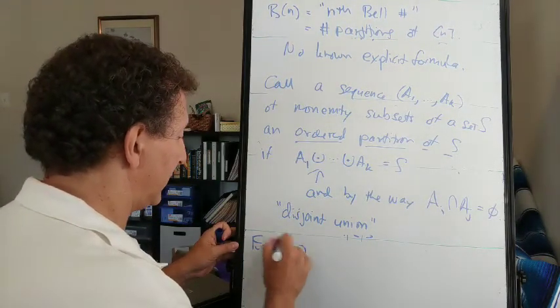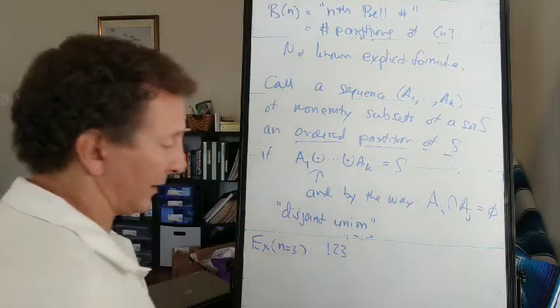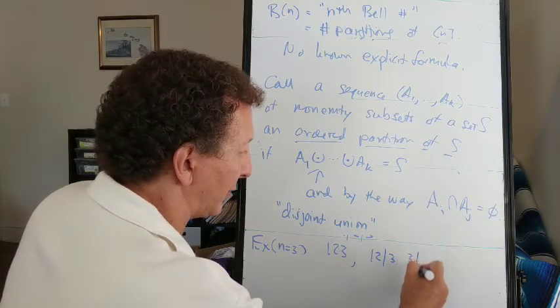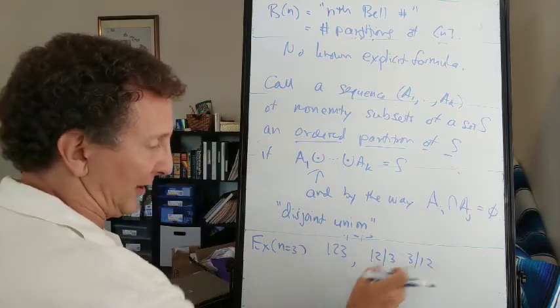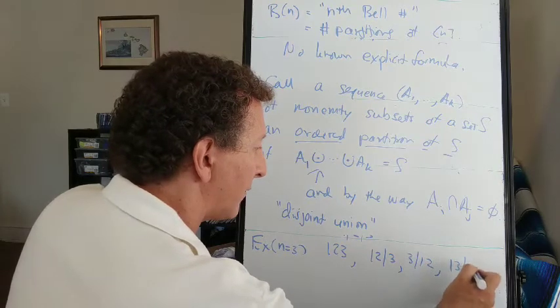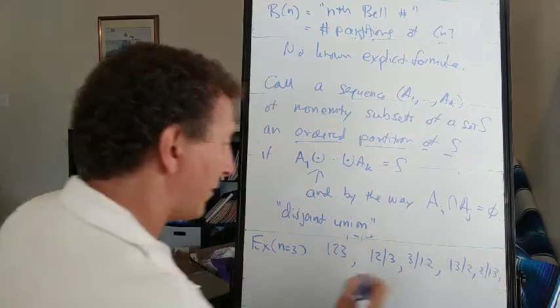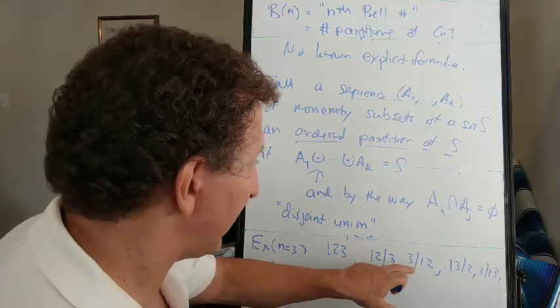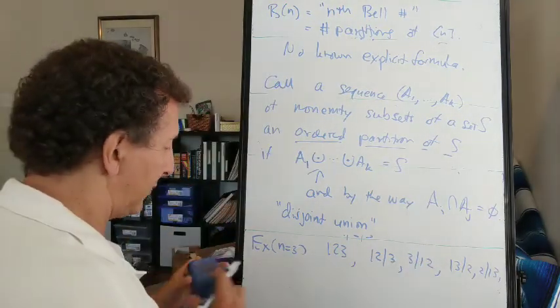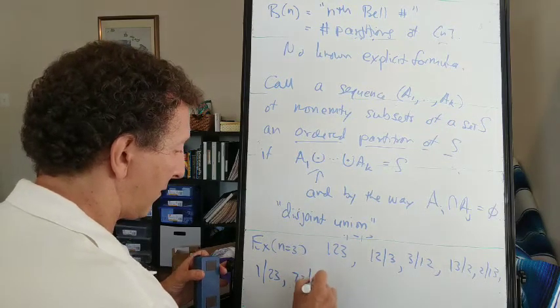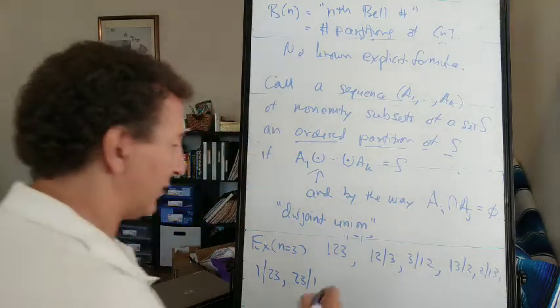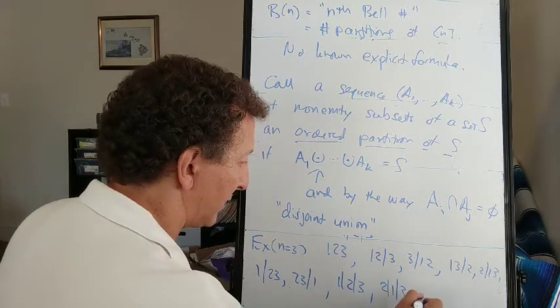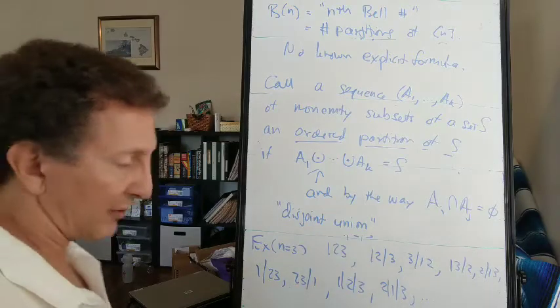So for example, when n equals 3, we've got the one block ordered set partition 1, 2, 3. And then the two block ordered set partitions can be written with either block first. These count is different now. I've got that one already. Let's see. If I need 3 by itself, 2 by itself, I need 1 by itself. And then if all of the blocks have size 1, then we basically write down the permutations of 1, 2, 3, and then we have all 6 of them, and each one of them counts as a different ordered set partition.